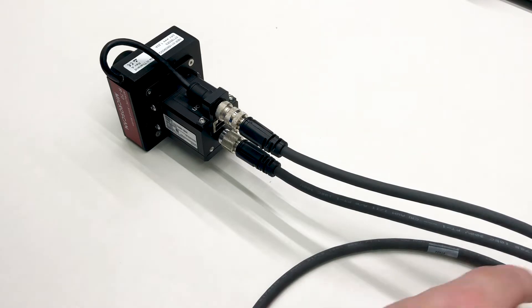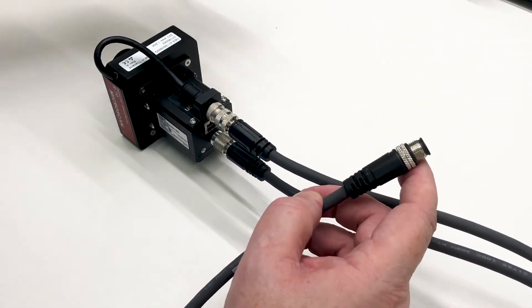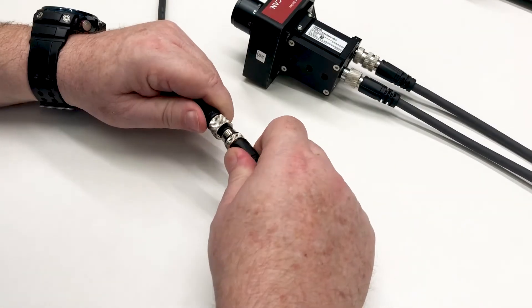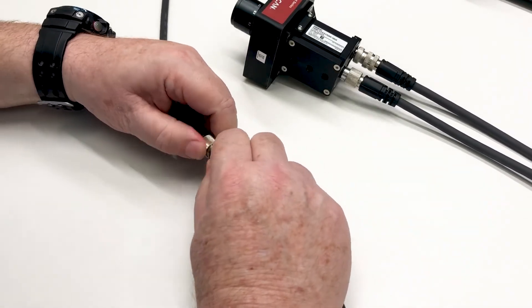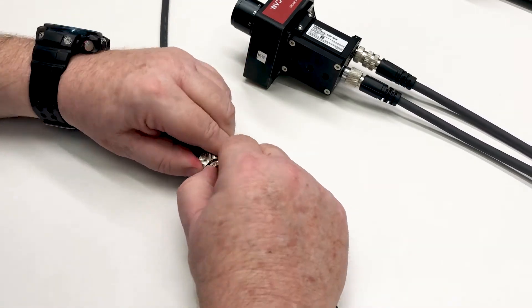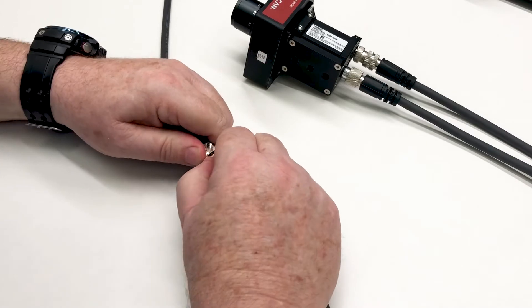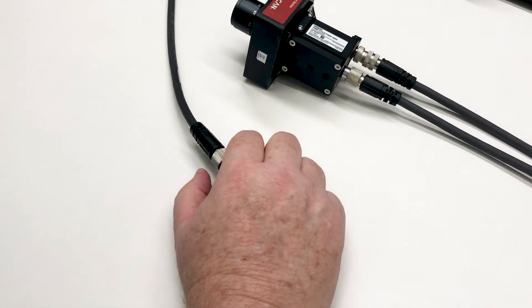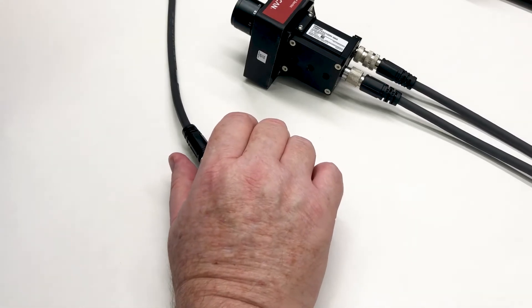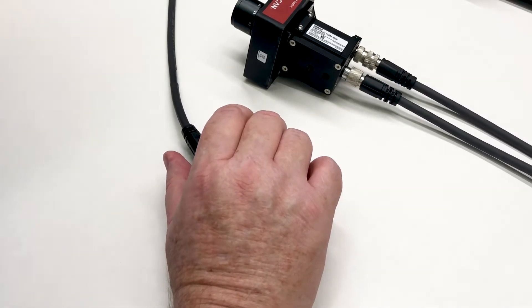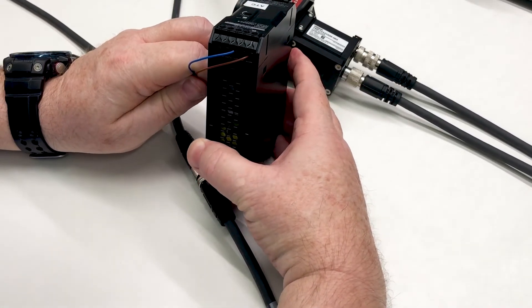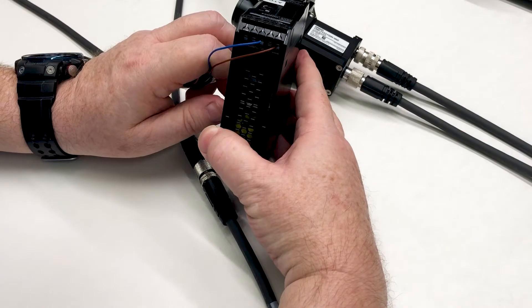Okay, now you attach your flying lead cable to your Y cable. And same thing, you rotate until you feel it meets up and then screw in. And the other end of your flying lead cable you want to connect your brown wire to the positive 24 volt supply and the blue wire to the negative.